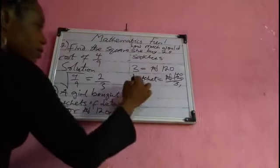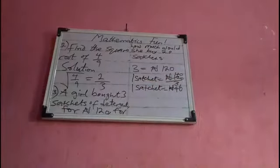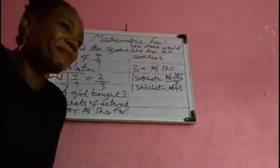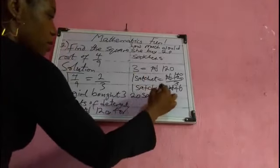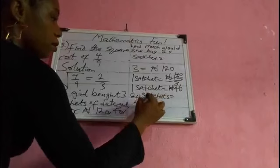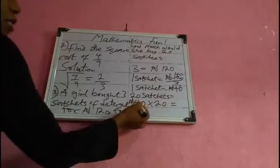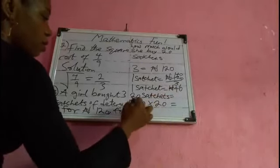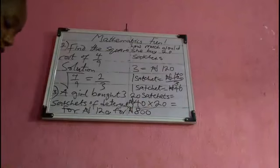One sachet of detergent costs 40 naira. Now that we know the value of one sachet, for 20 sachets we multiply 40 by 20. Four times two gives us eight, and bringing back the zeros gives us 800 naira. So 20 sachets will cost 800 naira.